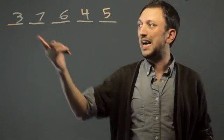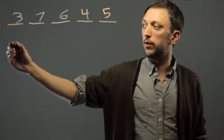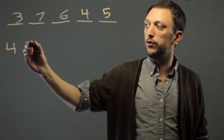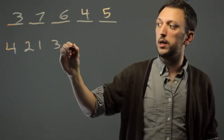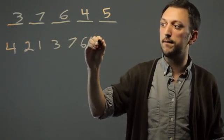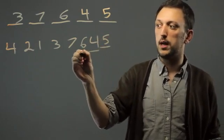If we were to keep adding on to it, for example, the number 4, 2, 1, 3, 7, 6, 4, 5. We draw our places again.